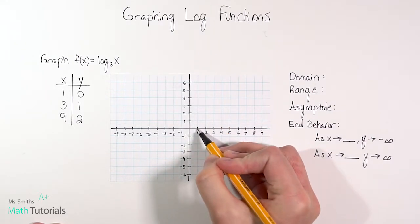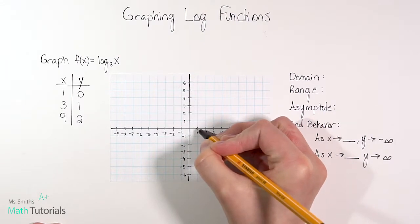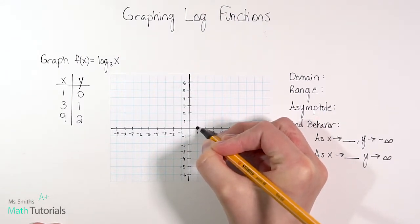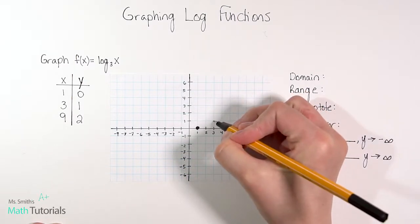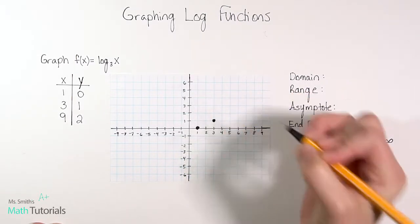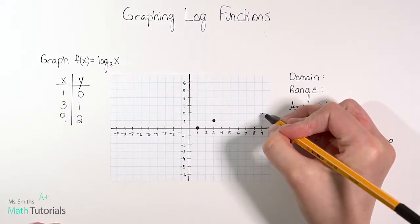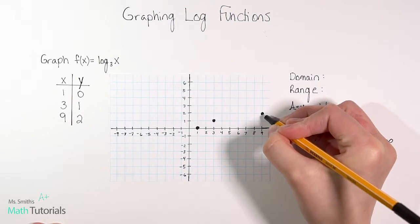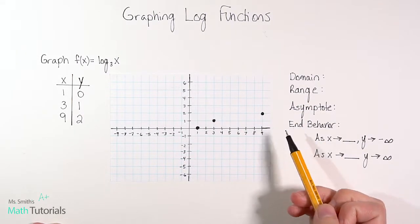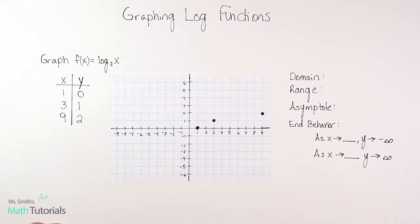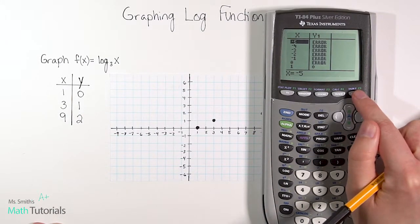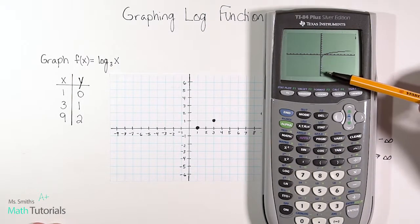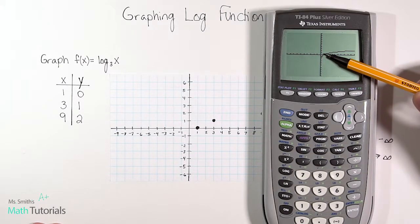My first point is at (1, 0), right here. My next point is at (3, 1), right there, and (9, 2). It may be difficult to see. If you're just learning this it might be difficult to know how the whole picture should look based on just those three points. So it's helpful to bring out the calculator and hit graph — that gives you an idea of what's going to happen in this picture. We've got this graph moving up and then curving.